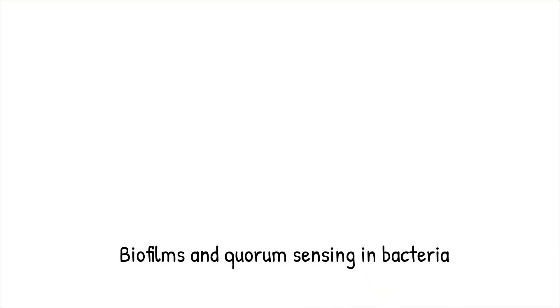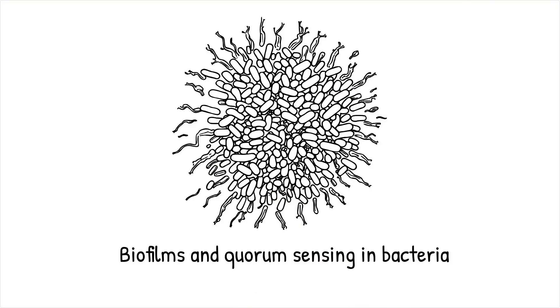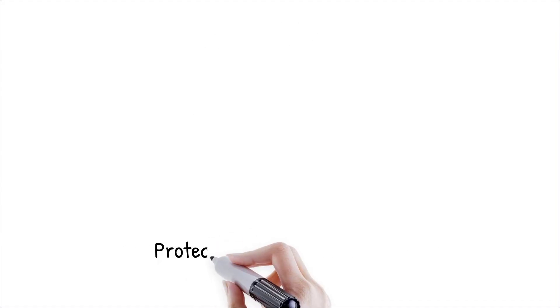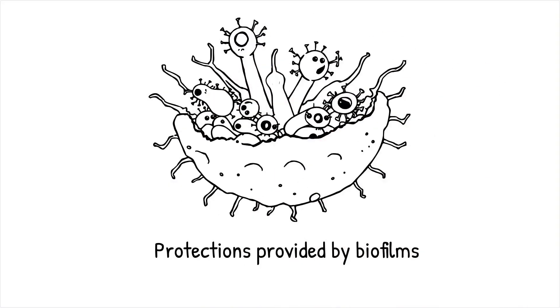Biofilms are dense, structured communities of bacteria embedded in a protective extracellular matrix. Quorum sensing plays a critical role in biofilm formation by regulating the production of matrix components and coordinating bacterial adhesion. Biofilms offer bacteria protection from antibiotics, immune responses, and environmental stresses. Quorum sensing ensures that biofilm formation occurs only when the population is large enough to benefit from this communal lifestyle.